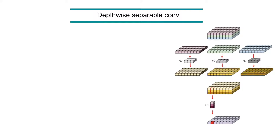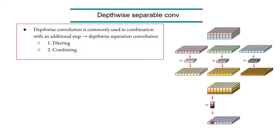So basically what we've done is split the input tensor into multiple channels, apply each kernel over each channel, and construct the output tensor. This step is called filtering — it's what the convolution operation does. The next step is called the combining step, where we take the three-dimensional tensor and combine the channels. You can construct any number of output channels from those three input channels.